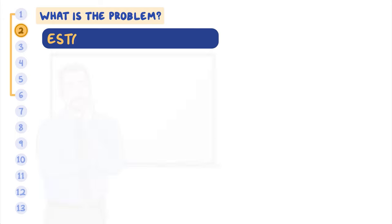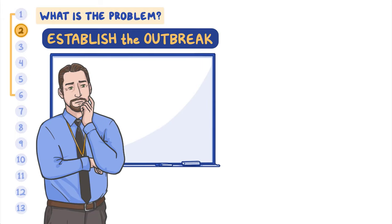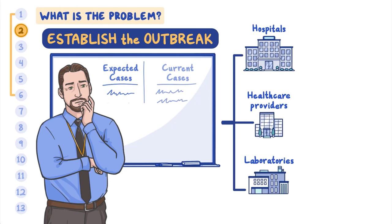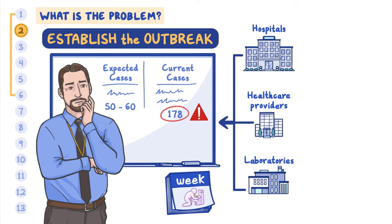Ezra must also establish or determine that an outbreak is occurring by comparing current surveillance numbers to what is expected. These surveillance data are collected via reports from hospitals, healthcare providers, and laboratories. At any given time, there will be an expected number of people with gastrointestinal symptoms in an area. But if the disease pattern changes or this number suddenly increases beyond the expected amounts, this may be the first indication of an outbreak. Ezra needs to know how many people developed nausea and vomiting this week and compare that with the weekly numbers from previous years.